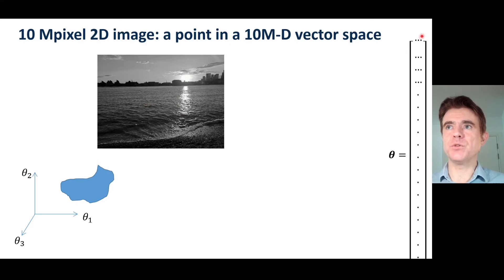And therefore, this particular photograph is a single point in a 10 million dimensional vector space. So that's quite an interesting concept.